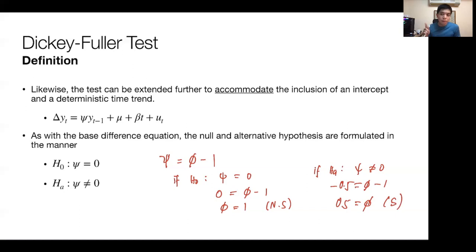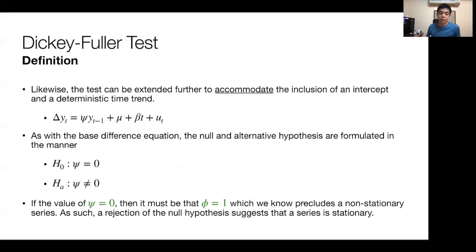Now you can already see there are a couple of limitations with this test. One is immediately understanding or knowing when to include this time trend or intercept. It's kind of hard to tell for some series whether they deserve to have a time trend or an explicit intercept modeled into them. There should be refinements to the test to alleviate that, but there are also other things we need to bear in mind.